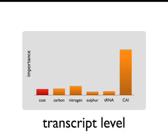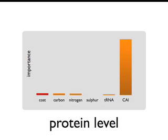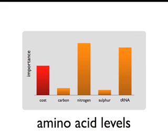Looking at transcript levels, codon adaptation is the most important factor in explaining variation, while other factors are less important — we take this as translatability being more important than cost minimisation. At the protein level, we see a similar story: codon adaptation of the transcript is the most important factor. Looking at free amino acid levels, there is a slightly different story, where cost, nitrogen content, and encoded tRNA count are three major predictors of free amino acid levels.